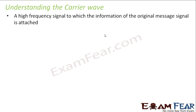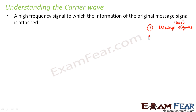We do not make any changes to the message signal. Whenever we talk about modulation, there will be two things involved: one is the message signal — the signal sent by the sender and the transmitter, which is a low frequency signal — and the second one is the carrier wave, which is a high frequency wave. We will not make any changes to the message signal during modulation because the message signal contains the information, and we do not want any change to it; the information has to be retained.